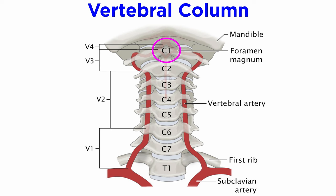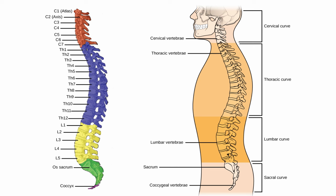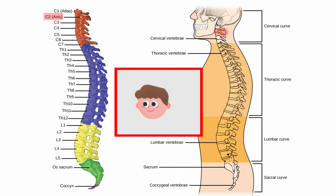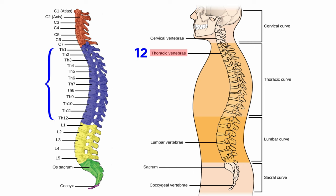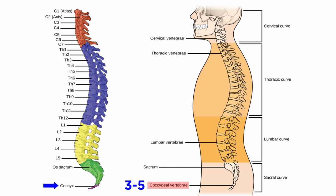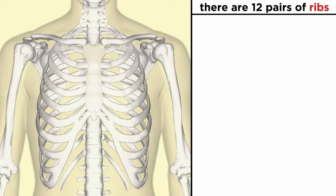The vertebral column protects the spinal cord, which exits the skull via the foramen magnum, and is composed of several types of vertebrae: cervical, thoracic, lumbar, sacral, and coccygeal. Within the cervical vertebrae, the atlas C1 is the first and allows the head to nod up and down, while the axis C2 is second and allows the head to shake left and right. There are seven cervical vertebrae, 12 thoracic vertebrae, 5 lumbar vertebrae, 5 fused sacral vertebrae known collectively as the sacrum, and 3 to 5 fused coccygeal vertebrae, colloquially known as the tailbone.